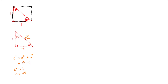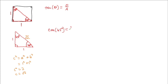So our hypotenuse has the length root 2. We leave it as root 2 rather than a decimal, because this gives us exact, accurate answers. Now if I look at tan of 45 degrees, I can use the fact that tan θ is opposite over adjacent. Going to one of my 45 degree angles, the opposite side is 1, and the adjacent side is also 1. So tan of 45 degrees is 1.